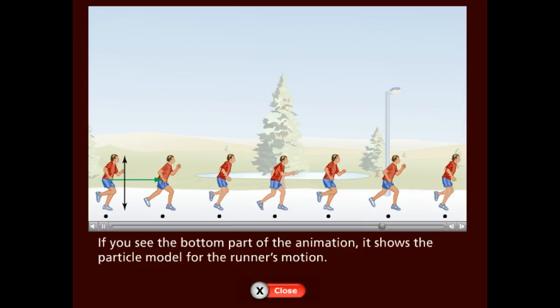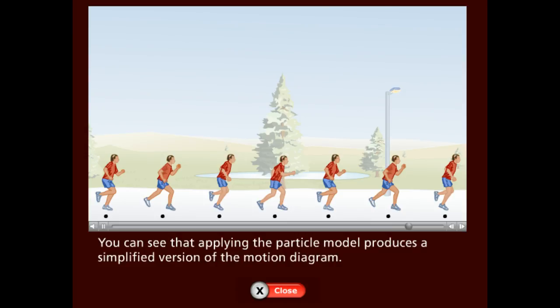If you see the bottom part of the animation, it shows the particle model for the runner's motion. You can see that applying the particle model produces a simplified version of the motion diagram.